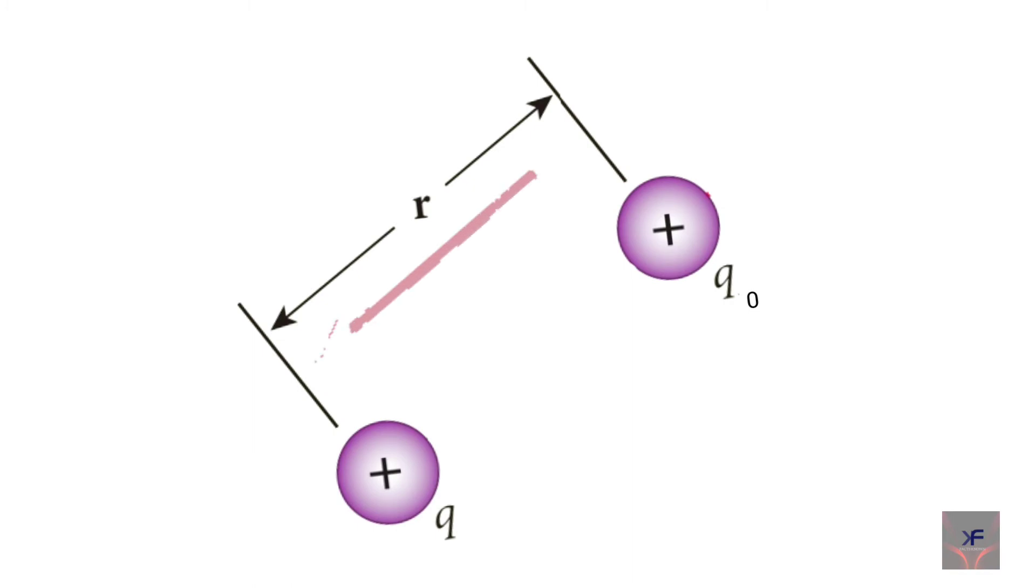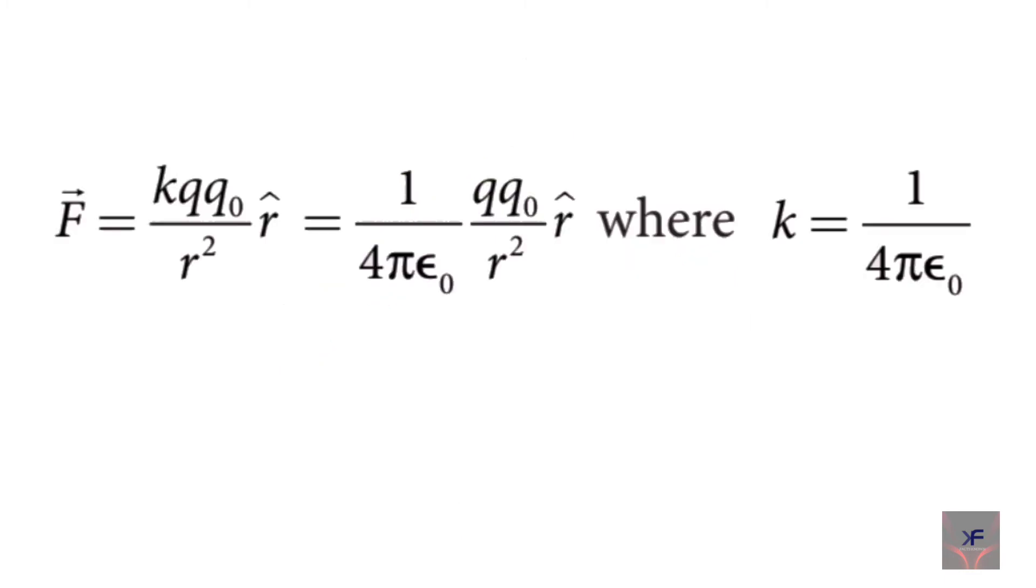So an electrostatic force gets exerted by the charge Q0 due to Q, which is given by Coulomb's Law. F is equal to K into Q into Q0 divided by R square and the whole multiplied by vector R, where K is equal to 1 divided by 4 pi epsilon 0.